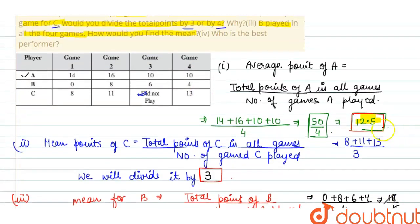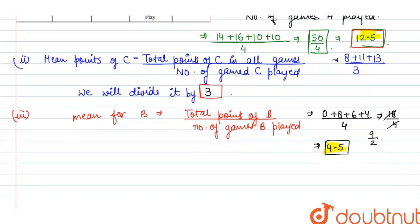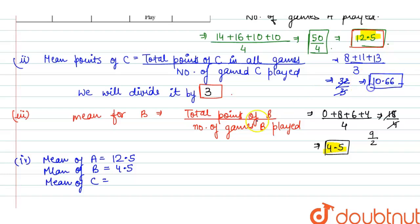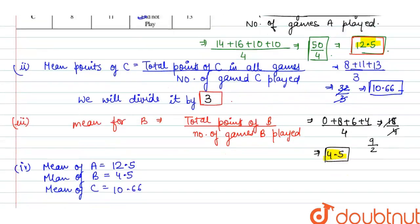Now the last part is asking who is the best performer. We have to find the best performer. Mean of A we get 12.5, mean of B is 4.5, but we have not found the mean of C. So to find mean of C, we will calculate 8 plus 11 plus 13 divided by 3. When we solve it, 32 upon 3, when we cut it, 10.666. So mean of C is 10.666.